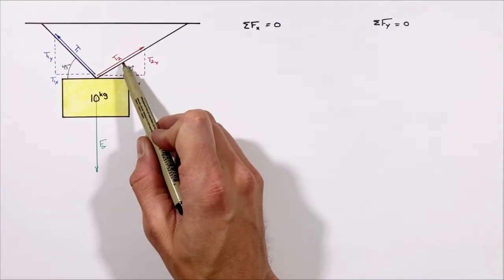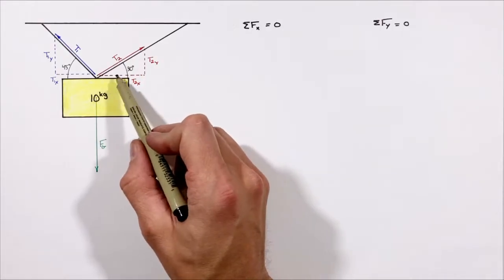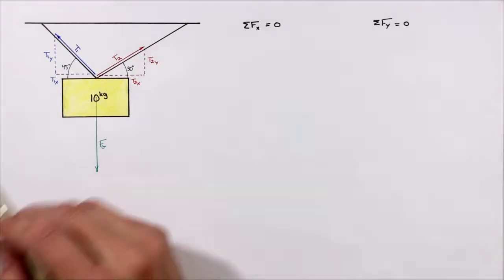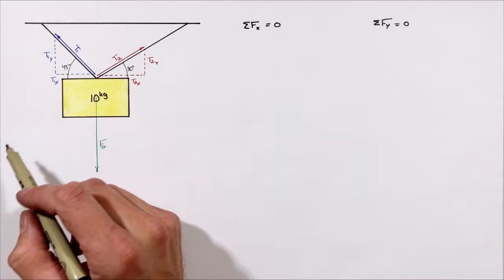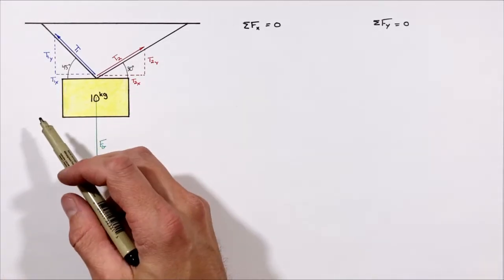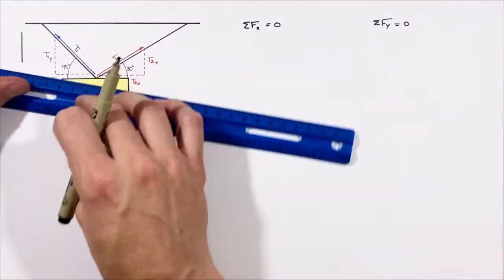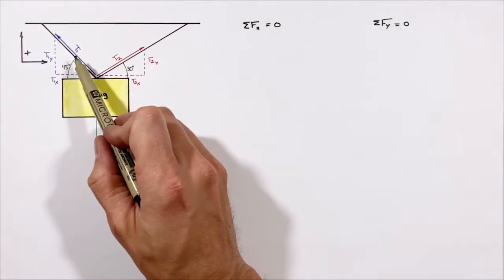What we need to do is establish a positive direction here, and so what we're going to do in this problem is do what we typically do, and that is say up and to the right are positive.